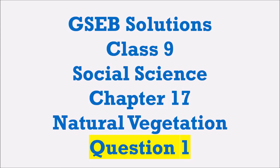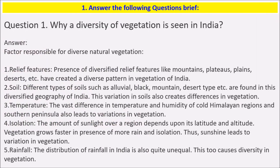Let's solve question 1 of this chapter. Question 1: Answer the following questions briefly. The first one is: why is a diversity of vegetation seen in India? There are many factors which are responsible for the diverse natural vegetation. The first one is relief features — the presence of diversified relief features.